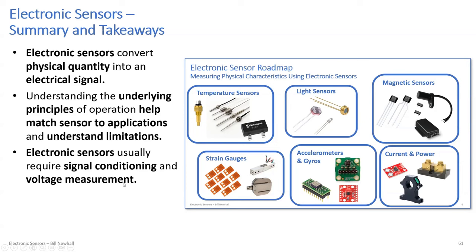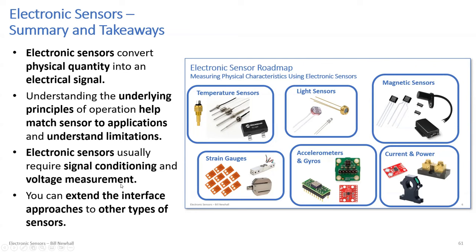Electronic sensors usually require some kind of signal conditioning and voltage measurement. That conditioning might be amplifying the signal or attenuating it so you have a reasonable range to measure with an ADC. You can extend these interface approaches to other types of sensors — an analog humidity sensor might have an analog voltage interface or a digital serial interface. We're not trying to cover all sensors, just give you a taste of the problems associated with using sensors so that once you know their capabilities, you might come up with novel solutions.